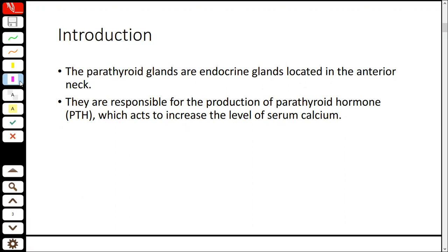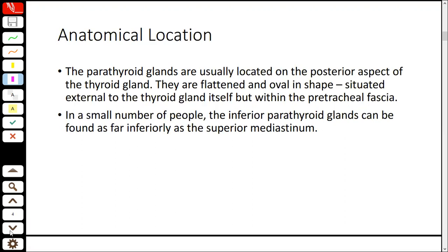PTH regulates serum calcium levels in the body. Regarding anatomical location, the parathyroid is in vicinity of the thyroid gland, on its posterior aspect. It is flat and oval. These are separate entities but wrapped in the same fascia as the thyroid gland, which is the pre-tracheal fascia.